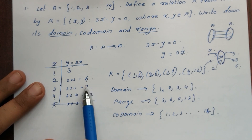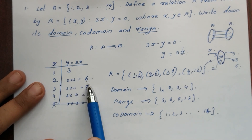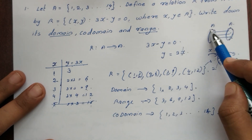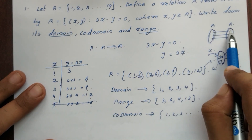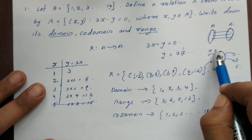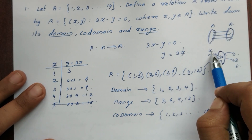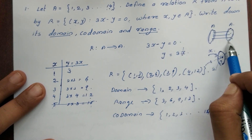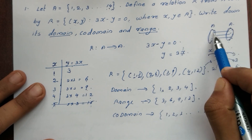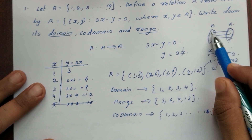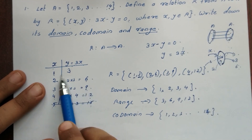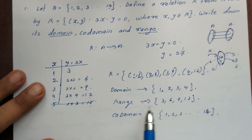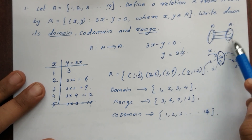So in summary, the domain is {1, 2, 3, 4}, the range is {3, 6, 9, 12}, and the co-domain is set A = {1, 2, 3, ... 14}.